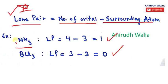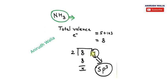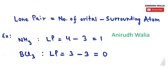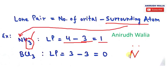Let's apply this to ammonia. The number of orbitals for ammonia we already calculated as 4. Surrounding atoms for nitrogen: there are 3 hydrogen atoms surrounding it, so surrounding atom = 3. Lone pair = 4 − 3 = 1. So in ammonia there is 1 lone pair. The structure shows nitrogen with 3 hydrogens and 1 lone pair.